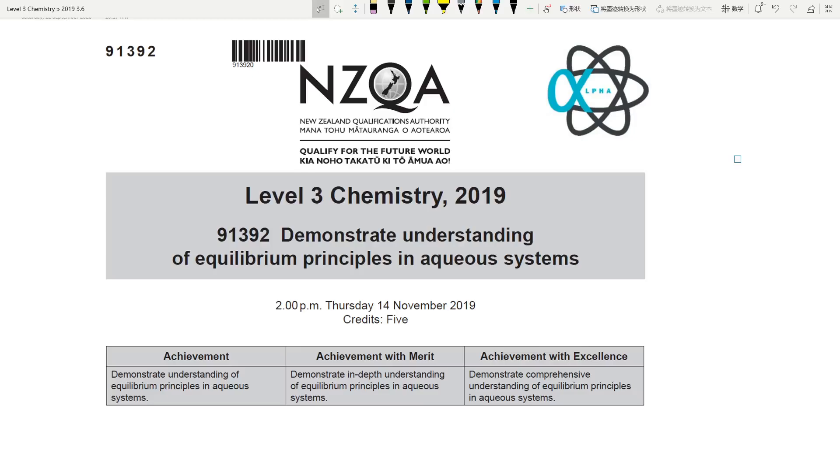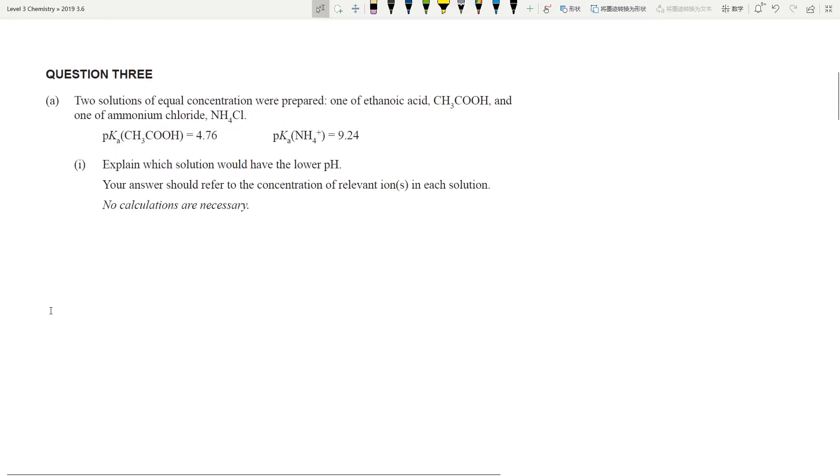Greetings and salutations. Welcome to question 3 of the Level 3 Aqueous Standard of 2019. This is the last question. Most of it is still on acids and bases. Let's get into it. Question 3. So we've got two solutions: CH3COOH and ammonium chloride. Explain which solution has the lower pH.